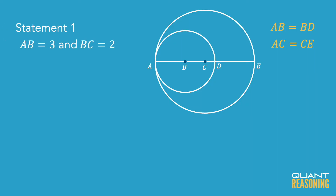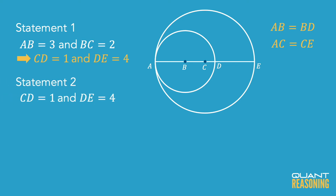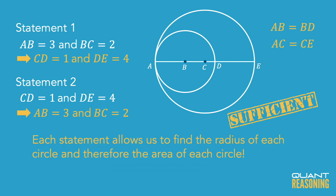Now in this case, since each of these statements allows me to find the size of the large radius and the size of the small radius of the large and small circles respectively, I can answer the question. I'm not actually going to do the math because I don't need to. But if you have the radii of two circles, you can find the difference of areas of those two circles. And therefore, I'm going to go ahead and pick answer choice D.